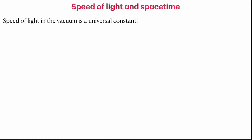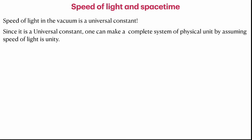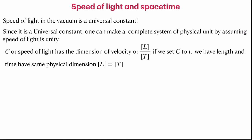As per Einstein's postulate, the speed of light in vacuum is a universal constant and nothing can move faster than it — the same for all inertial observers. Since it is a universal constant, one can develop a complete system of physical units by setting the speed of light equal to 1. This is natural to relativity theory. Speed of light has dimensions of length over time, so setting c = 1 means length and time have the same physical dimension.